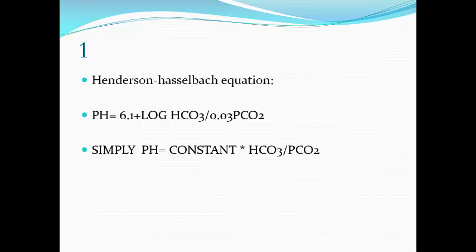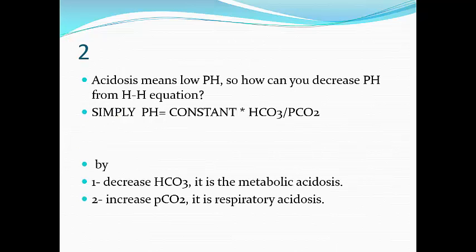First of all, you need to know what pH is. Simply: pH equals a constant multiplied by bicarbonate over PCO2. So acidosis means low pH. How can you decrease pH? First, if you decrease the bicarbonate, you will decrease pH — this is metabolic acidosis. Second, if you increase the PCO2, you will decrease the pH — this is respiratory acidosis. The most important for everyone working in critical care is acid-base balance, specifically metabolic acidosis.